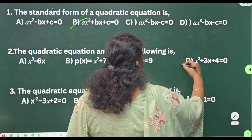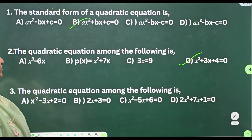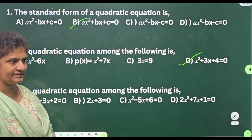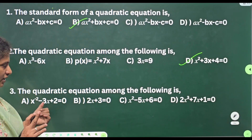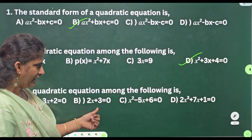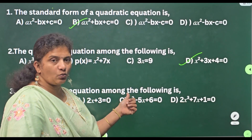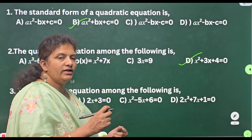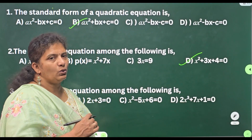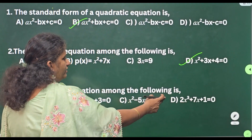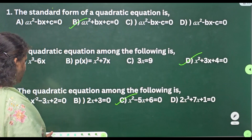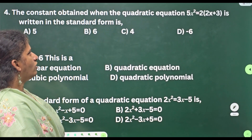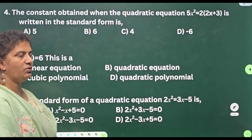And then x² + 3x + 4 = 0 — this is a standard form of quadratic equation. Third one: the quadratic equation among the following is — check for the equation x^(−2), it is not a quadratic, this is a linear equation. And here x² — if the degree is 2 then that type of equation is called a quadratic equation. This is 3, that means cubic equation. So your answer is option C.